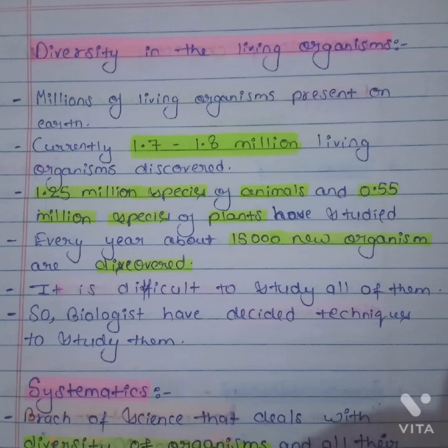Chapter 1: The Living World, Part 2. Topic: Diversity in the Living Organisms. Millions of living organisms are present on Earth. Currently, 1.7 to 1.8 million living organisms have been discovered — 1.25 million species of animals and 0.55 million species of plants have been studied. Every year about 15,000 new organisms are discovered.